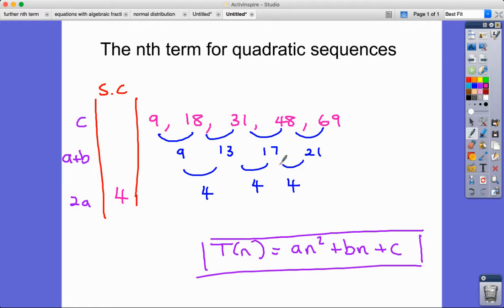Right. Our next job is to think what would have been the term before nine in that second row of differences. Well, if we know that the differences are always four, then really what we're doing is 21 minus 4 is 17, 17 minus 4 is 13, 13 minus 4 is 9, and 9 minus 4, 4 less than 9 gives us 5.